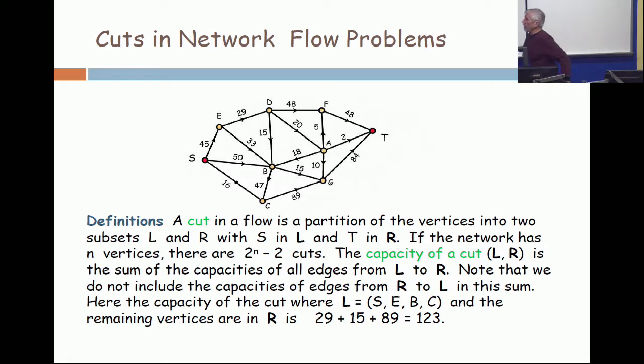Then you're adding up the edges which go from left to right, and that's 29, 15, and 89. And so the sum will be 123. And I point out that you don't add in the two edges which are going backwards, the edges with capacities 15 and 18. Those are not included in the capacity of the cut.